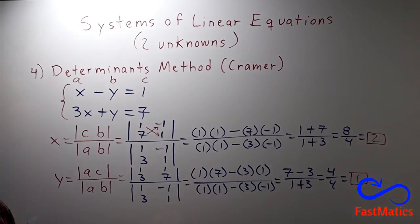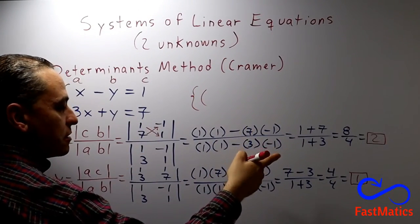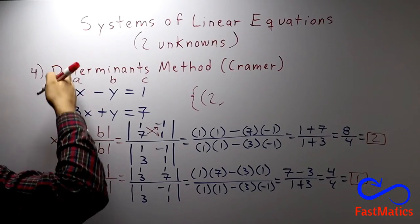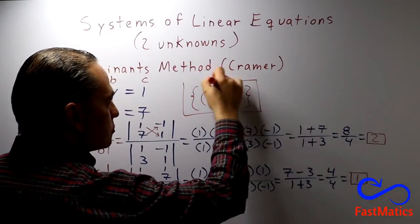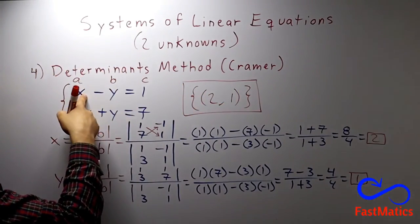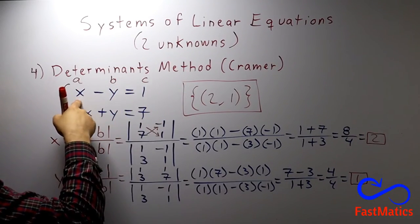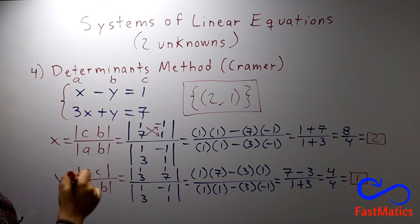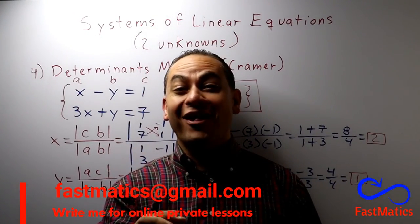And that's it, dear Phasmatic friends! We write the answers: the first number is x and then the value of y. If you replace both equations with x=2 and y=1, you will see that both equations are true: 2 minus 1 is 1, and 2 times 3 is 6, plus 1 is 7. Thank you very much. That's all folks. See you next time. Bye!